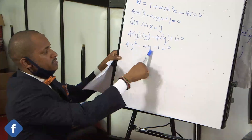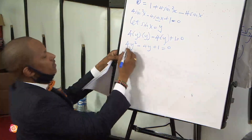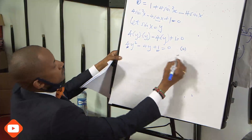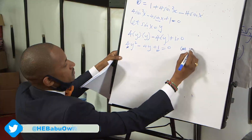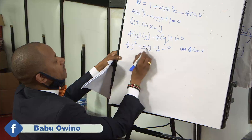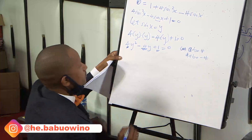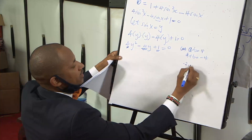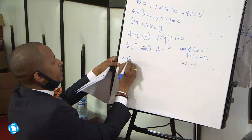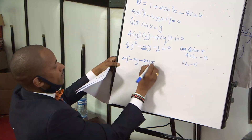This is a quadratic equation, so we factorize. We look for two numbers A and B such that A × B = 4 × 1 = 4, and A + B = −4. Those numbers are −2 and −2. Splitting the middle term: 4y² − 2y − 2y + 1 = 0.